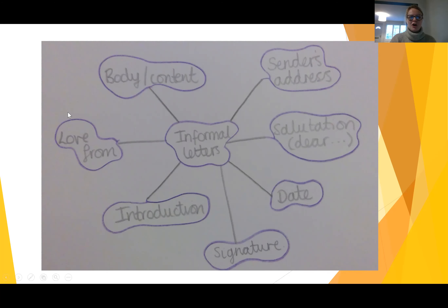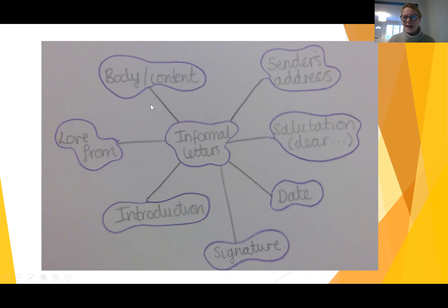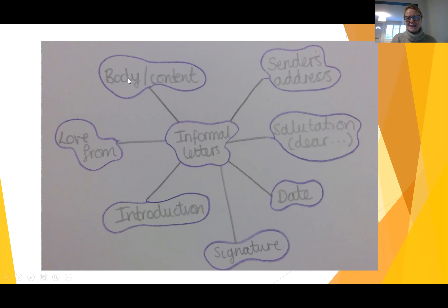At the bottom of our letter, we need to write our own name, so we sometimes would use a signature to sign off our letter. And then before your signature, because it's an informal letter, you might write 'love from Anne' or 'love from Emily'. And lastly, the main part of your letter, which is called the body or content — that is going to be the part where you write everything you want to say in your letter. So these are the features of an informal letter.